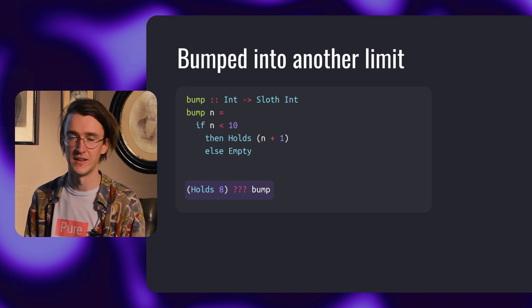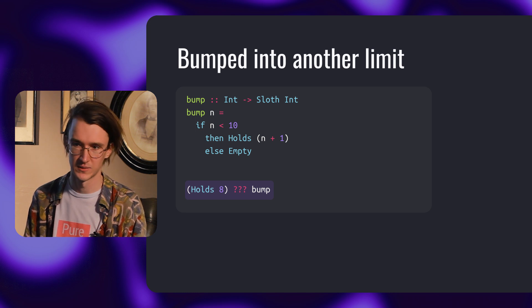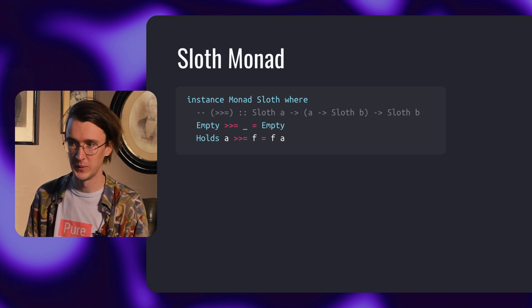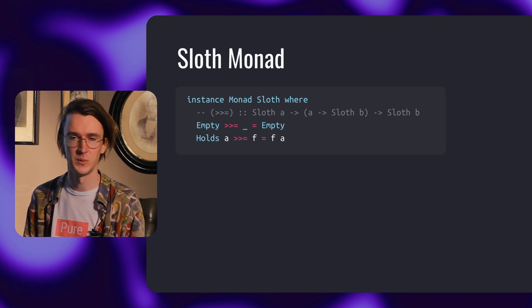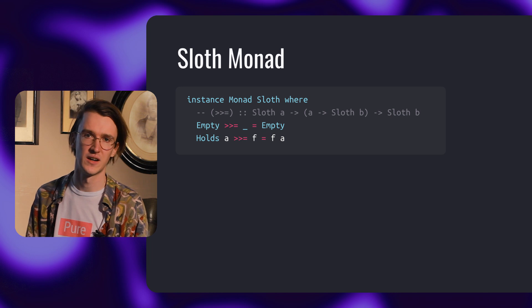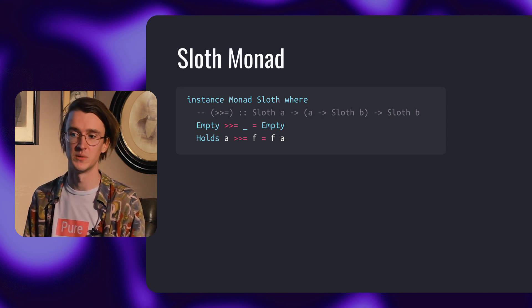Everybody knows that sloths are lazy and won't deal with numbers larger than 10. So if you ask them to bump a number, what happens next depends on the actual number. And what if we have multiple sloths and nested sloths? How do we apply a bump to hold 8? We need to reach for something more powerful. Monads have a function called bind, which applies a function that returns a value with a context to another value with a context. Monads are more powerful than applicative — they can use one value with a context to decide what to do next. In the case of sloths, if the first argument to bind is empty, we don't have anything to which we can apply the function, so the only thing we can do is return empty. And if the first argument is holds a, then we have some value a which could be applied to the second argument f, and the result is going to be a value of type hold b, which is just what we need.